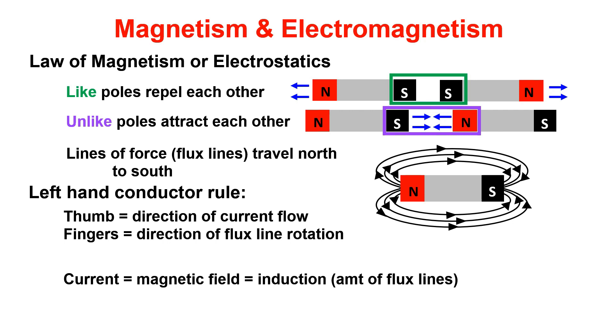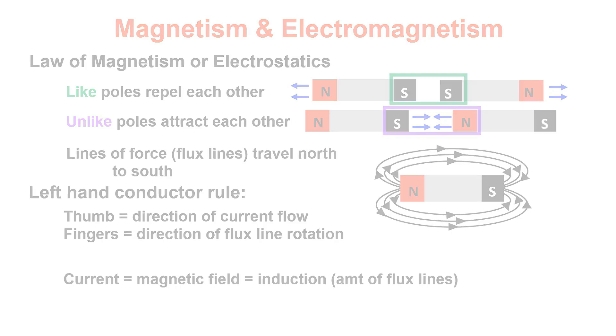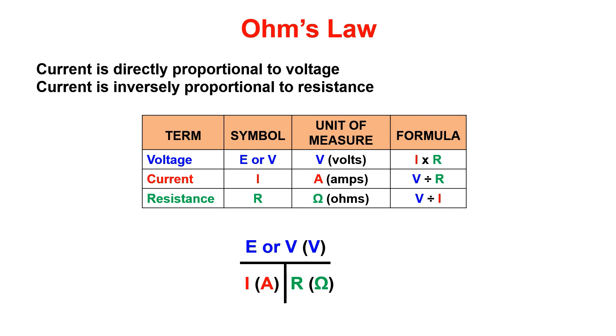Now for everyone's favorite part of course 101, Ohm's law. The two most important rules for Ohm's law is that current is directly proportional to voltage, meaning that with no change in resistance, if voltage increases, then current will also increase. So if there was no change in resistance and voltage decreased, then we would see a decrease in current.